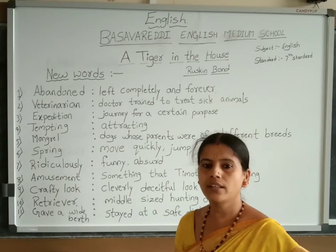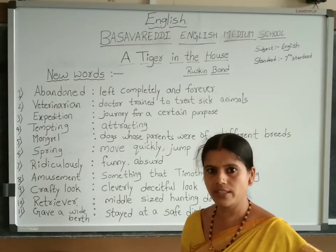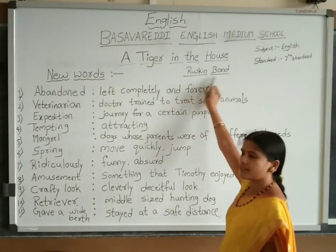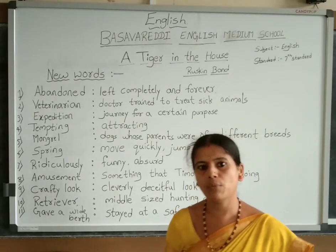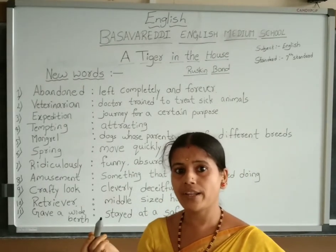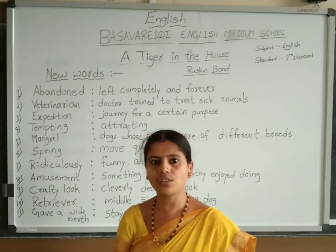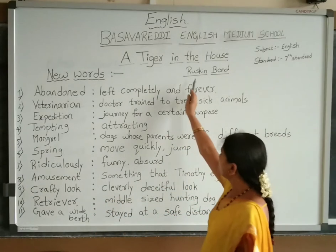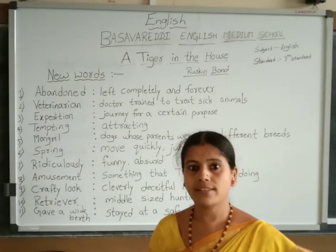Today, the first lesson of your class 7th standard is 'A Tiger in the House,' written by Ruskin Bond. I hope you all have heard the name of this great author. Even though he is from India, he used to write for America and all. Ruskin Bond is really a great writer.